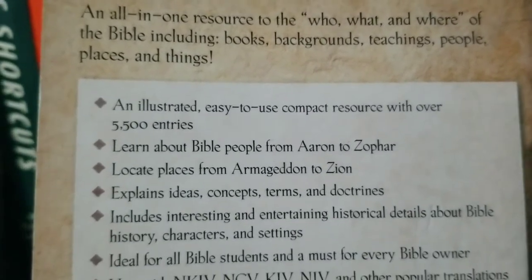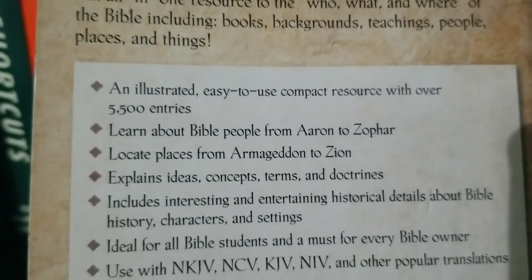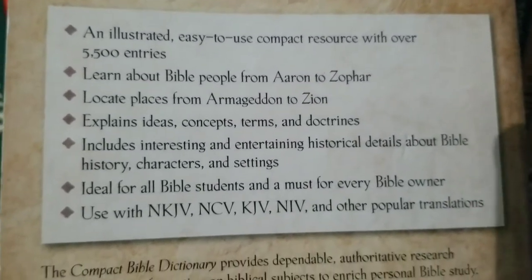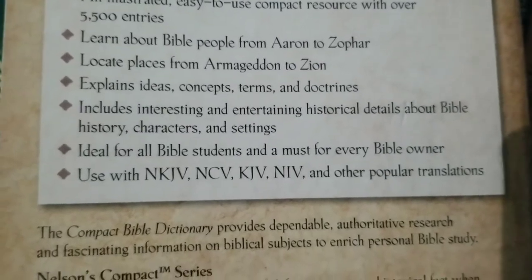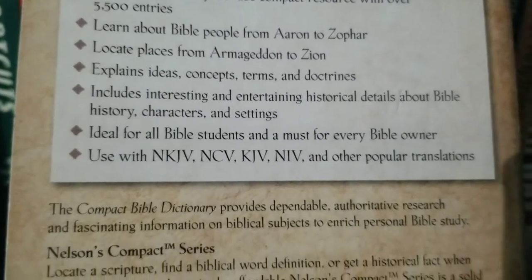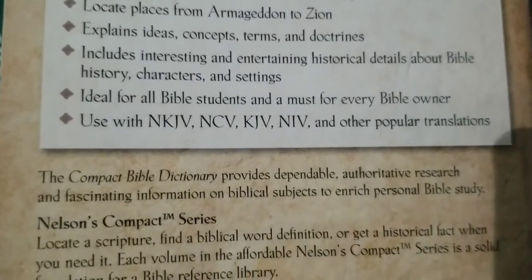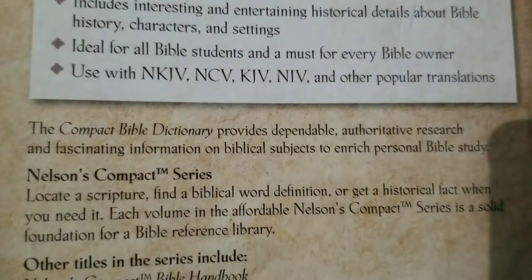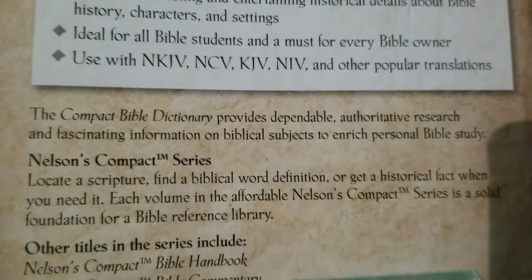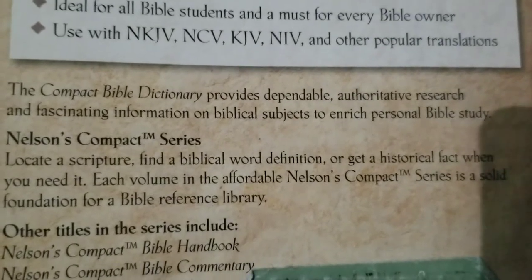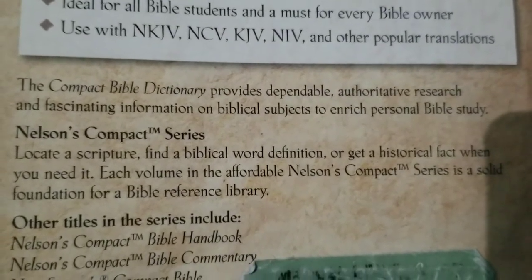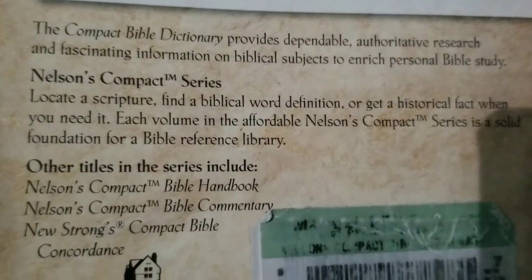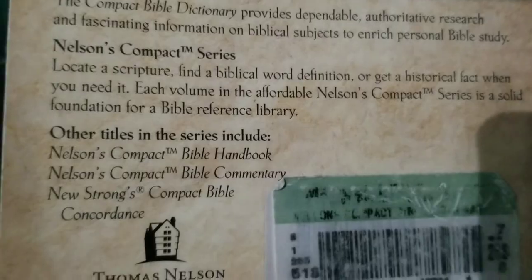They are the 1,000 most important entries on people, places, things, doctrines, and themes. They do admit that they leave out a lot of the extra details to make it easier to get to essential information.